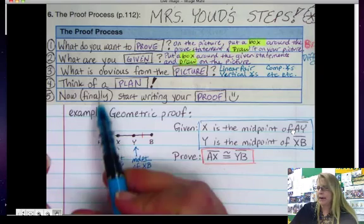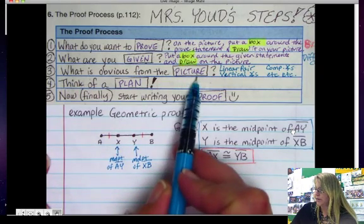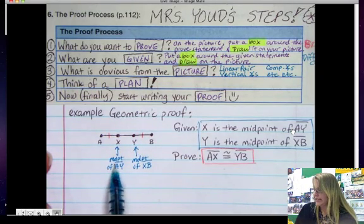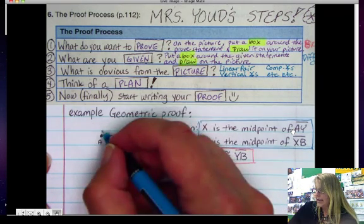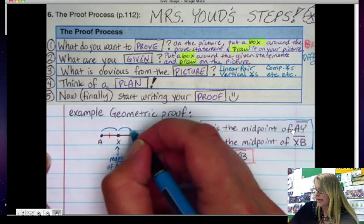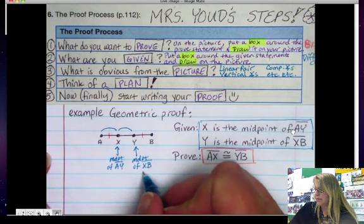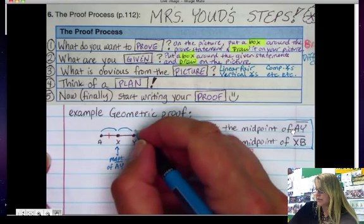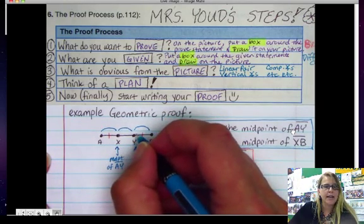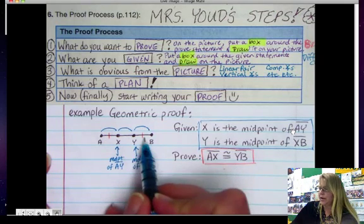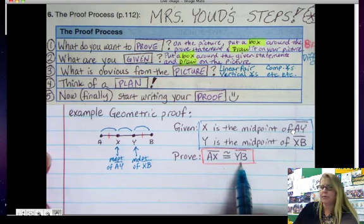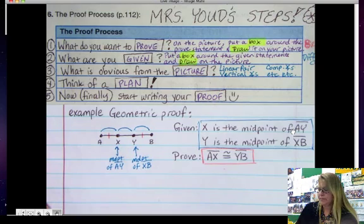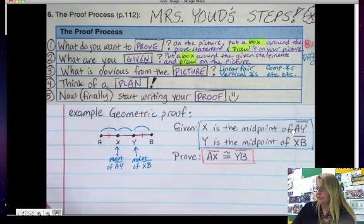So now let's think about number three, what's obvious from the picture. Well, from the picture, I can see that X is congruent to AY. Therefore, AX has to be equal to XY. And if Y is a midpoint of XB, then YB is also congruent to XY. So therefore, all these three should be equal to each other. And if that's the case, then I should be able to prove that these two are congruent because of the transitive property. Now we're going to finally go to step five, which is writing our proof.